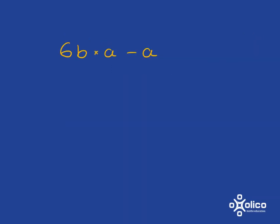If you have something like 6b times a minus a, this 6b times a needs to be done first. Now you can't actually do very much with that, except in algebra we tend not to write the multiplication sign. So we could just write that as 6ba minus a.